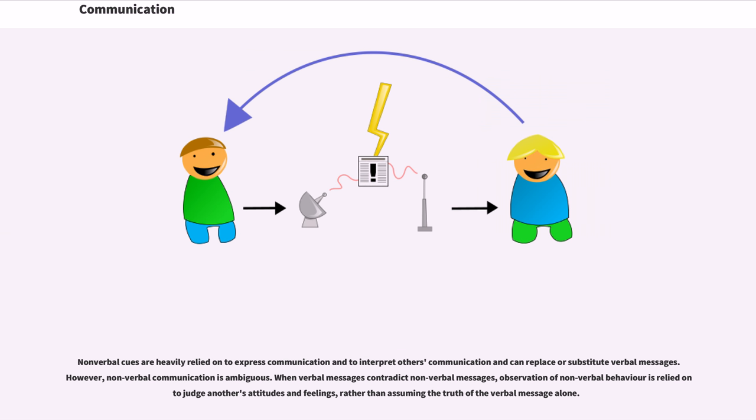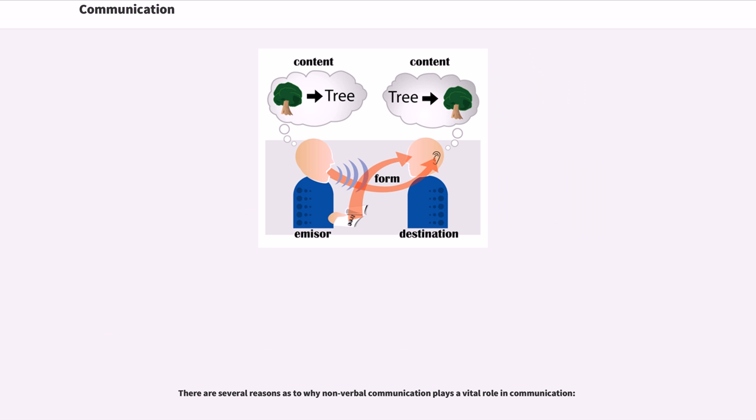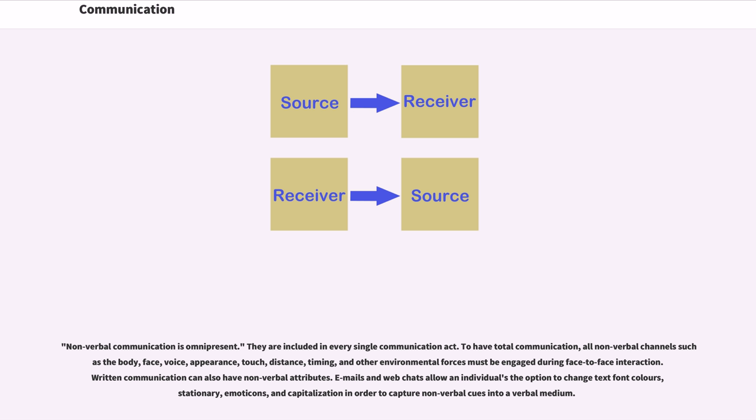However, non-verbal communication is ambiguous. When verbal messages contradict non-verbal messages, observation of non-verbal behavior is relied on to judge another's attitudes and feelings rather than assuming the truth of the verbal message alone. There are several reasons as to why non-verbal communication plays a vital role in communication.